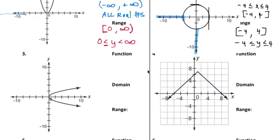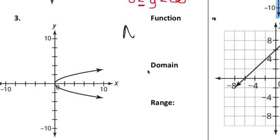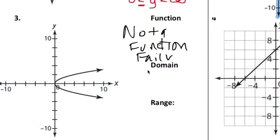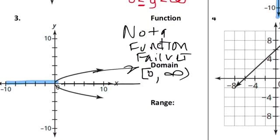Number three, not a function. Failed vertical line test. Domain starting with the x at zero, closed at zero, and then it continues on to positive infinity. So zero is less than equal to x.